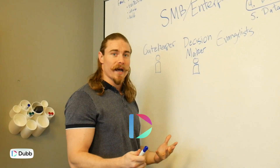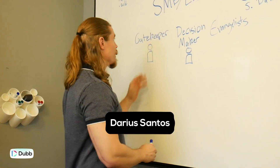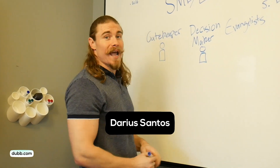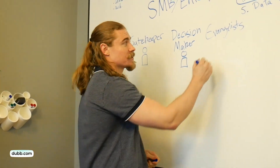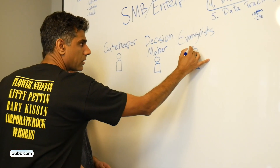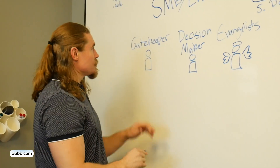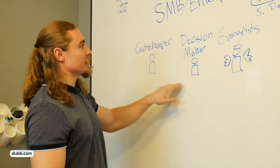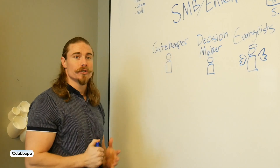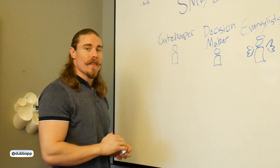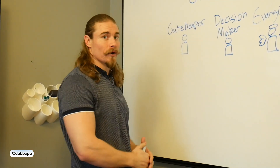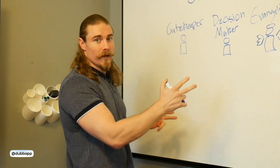There are different personalities at each of these types of corporations. These include gatekeepers, decision-makers, and evangelists. Evangelists are our friends — they sometimes have a halo. The messaging for each of these people is a little bit different. Ideally, if you know who you're speaking to, that is really going to help you tailor your messaging and your content directly to them.